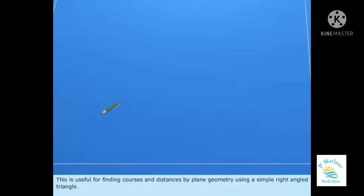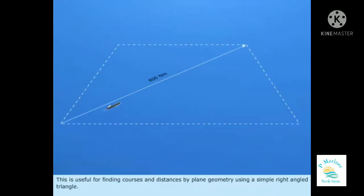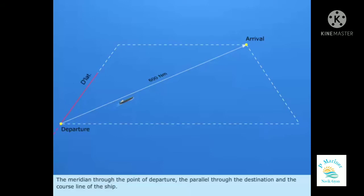This is useful for finding courses and distances by plane geometry using a simple right-angled triangle. We can form a triangle with three sides, namely: the meridian through the point of departure, the parallel through the destination, and the course line of the ship.